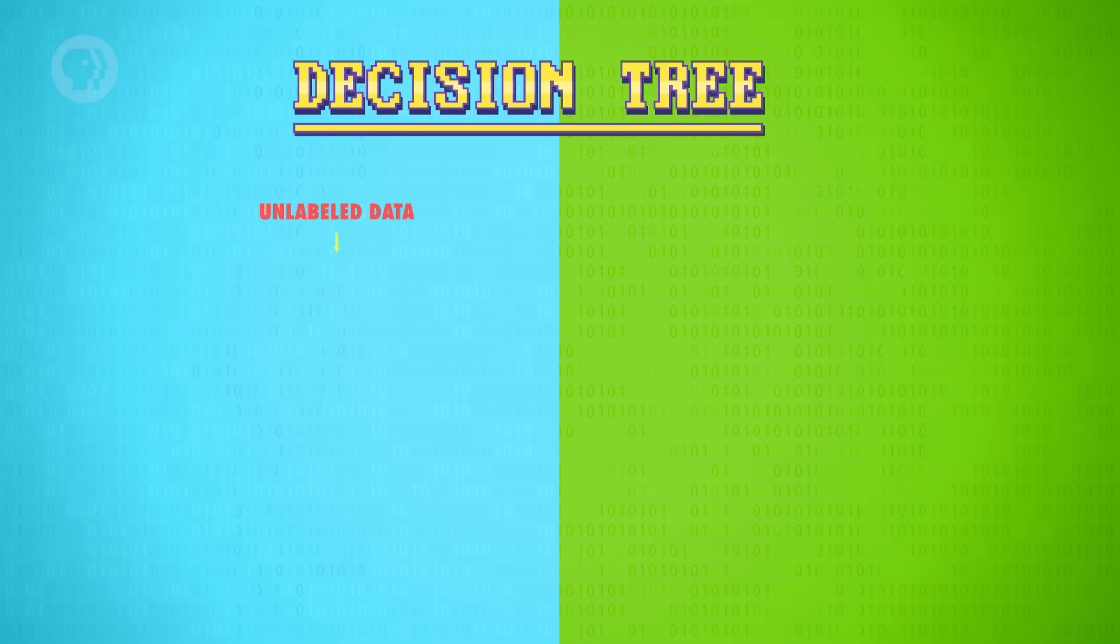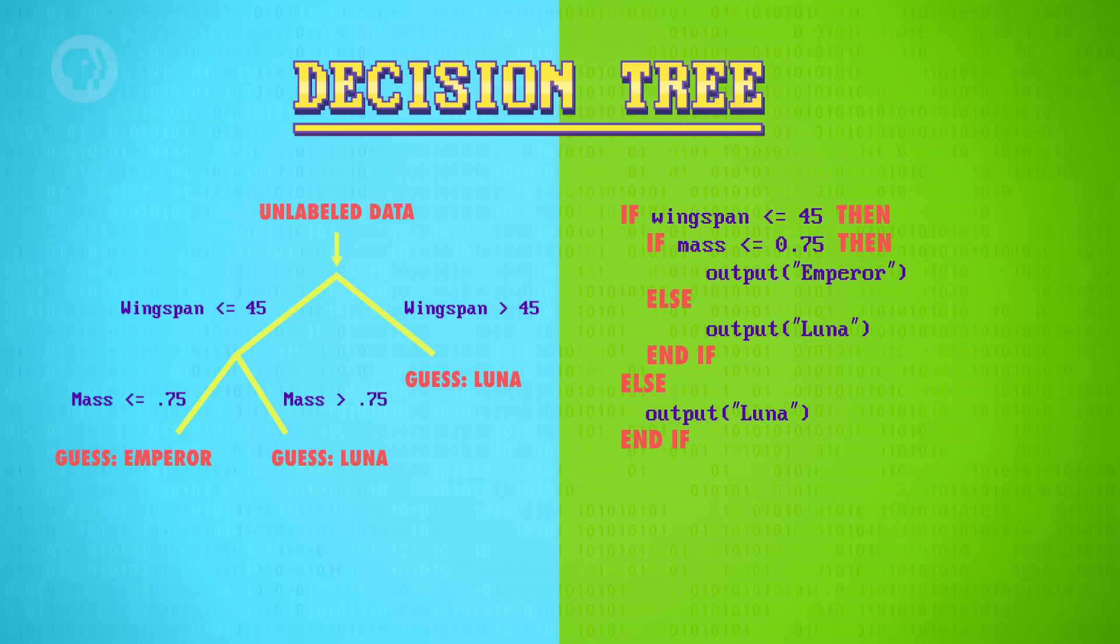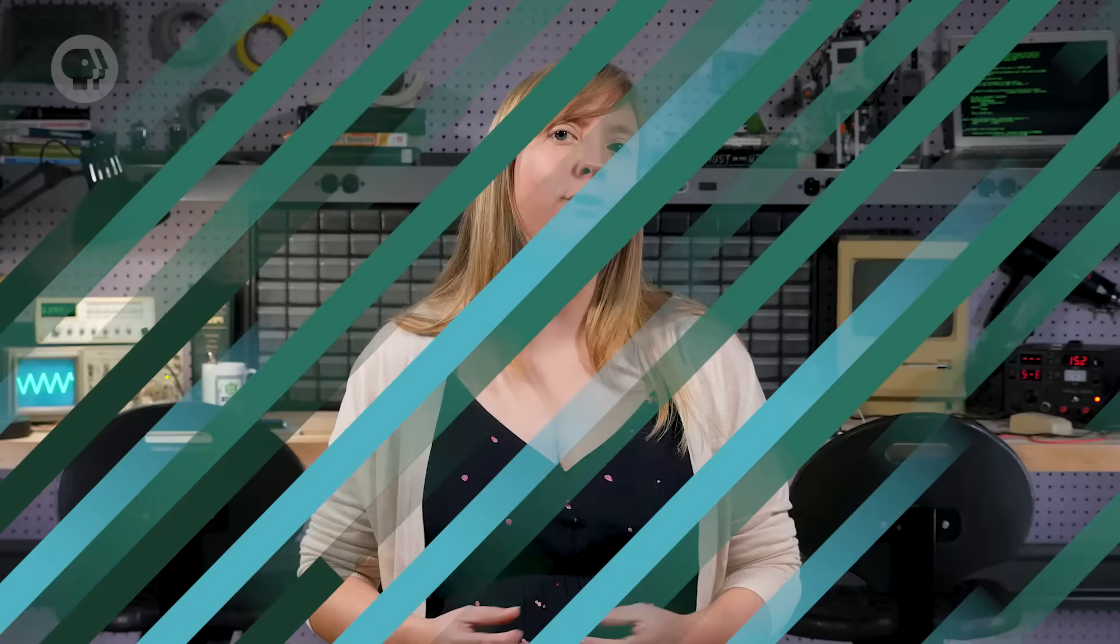This simple approach of dividing the decision space up into boxes can be represented by what's called a decision tree, which would look like this pictorially, or could be written in code using if statements like this. A machine learning algorithm that produces decision trees needs to choose what features to divide on, and then for each of those features, what values to use for the division. Decision trees are just one basic example of a machine learning technique.